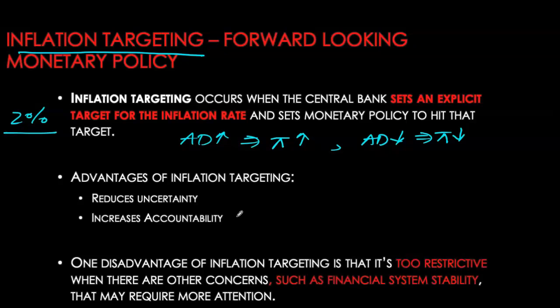A drawback of inflation targeting is that it can sometimes be too restrictive. For example, during the big financial crisis of 2008–2009, we had a severe output gap with output drastically below the potential level. In the face of such a big recession, the central bank let go of inflation targeting and focused on bringing the economy out of the recessionary output gap. In times of crisis, central banks will let go of inflation targeting to focus on areas of immediate importance.